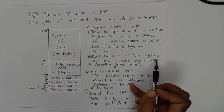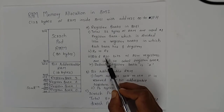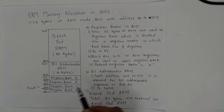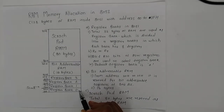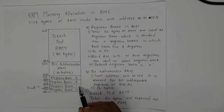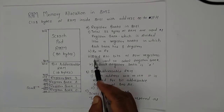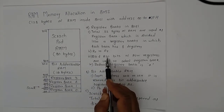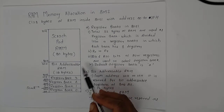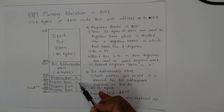When both RS1 and RS0 are 0, register bank 0 is selected. When RS1 is 0 and RS0 is 1, register bank 1 is selected.